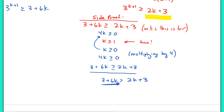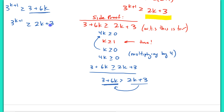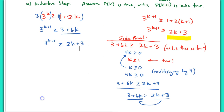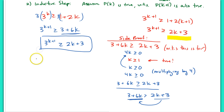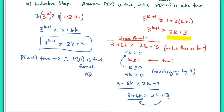So 3+6k is larger than 2k+3, meaning 2k+3 is smaller. Because it's smaller, I can replace the right-hand side with something even smaller — the 2k+3. I have now shown, after using my side proof, that 3 to the k+1 is greater than or equal to 2k+3. This is what I was wanting to prove — P(k+1) is true. Therefore, for every n, P(n) is true. That's your first inequality proof.